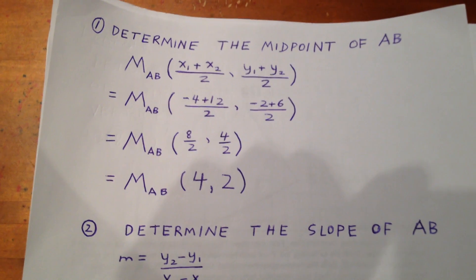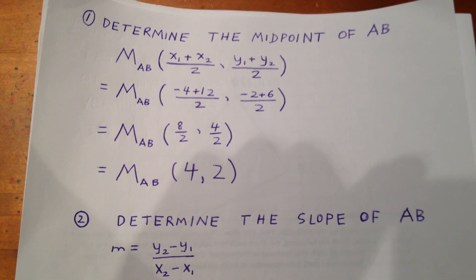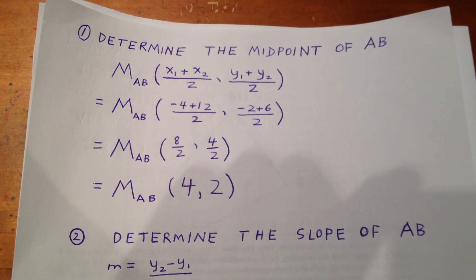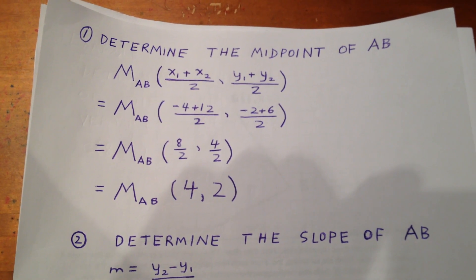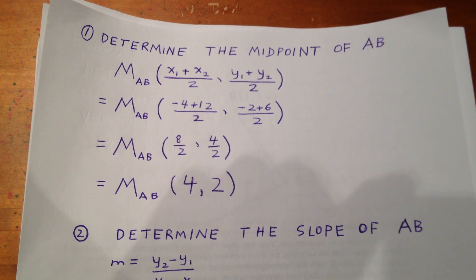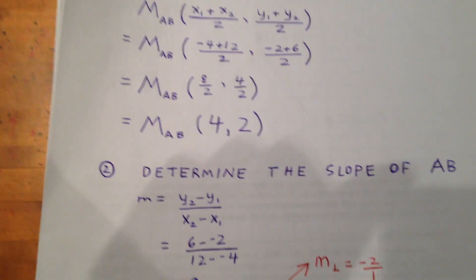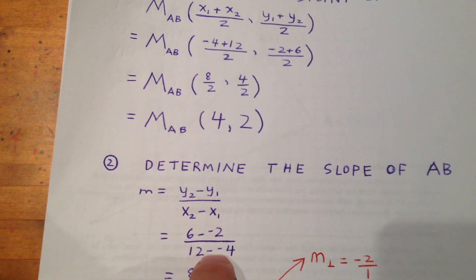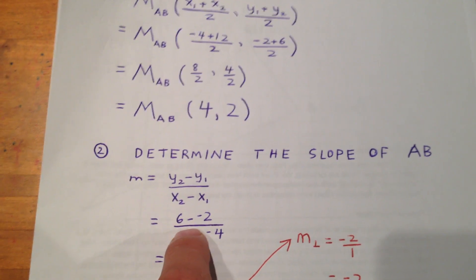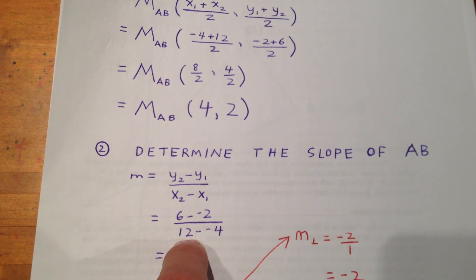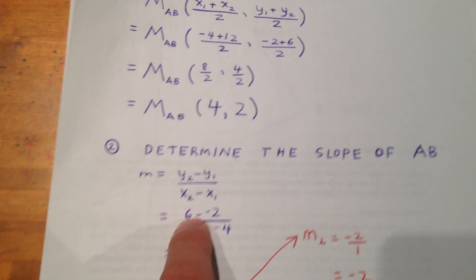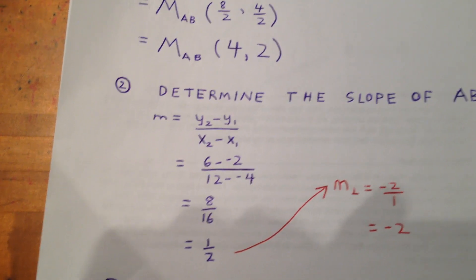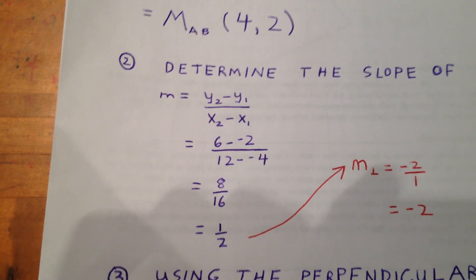Using our midpoint formula, and knowing that A is the point (-4, -2) and B is the point (12, 6), we see that the midpoint of AB will be at (4, 2). Then we determine the slope of AB. Using our slope formula, y2 minus y1 over x2 minus x1, the slope of AB is 6 minus negative 2 over 12 minus negative 4, which gives us 8 over 16, simplifying to 1/2.